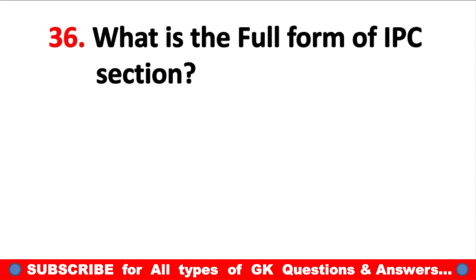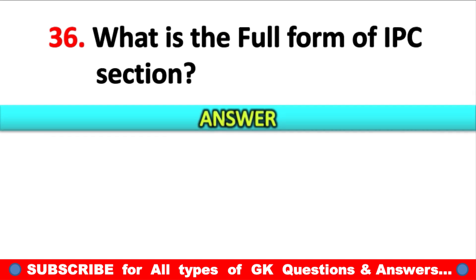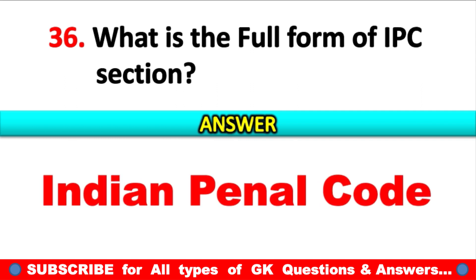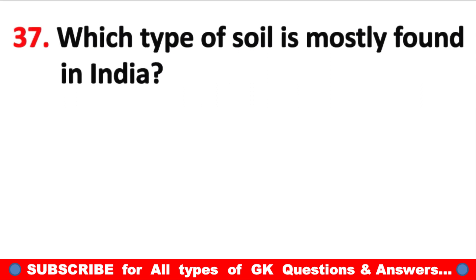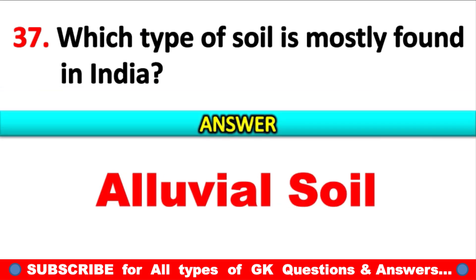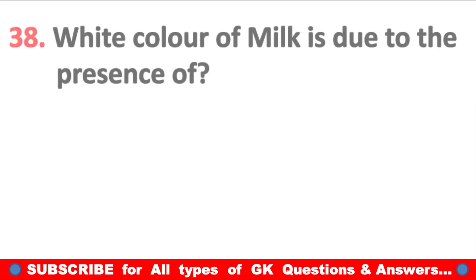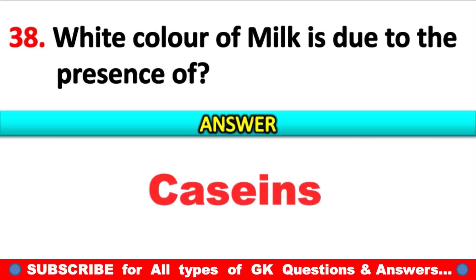What is the full form of IPC section? Answer: Indian Penal Code. Which type of soil is mostly found in India? Answer: Alluvial soil. White color of milk is due to the presence of? Answer: Casein.